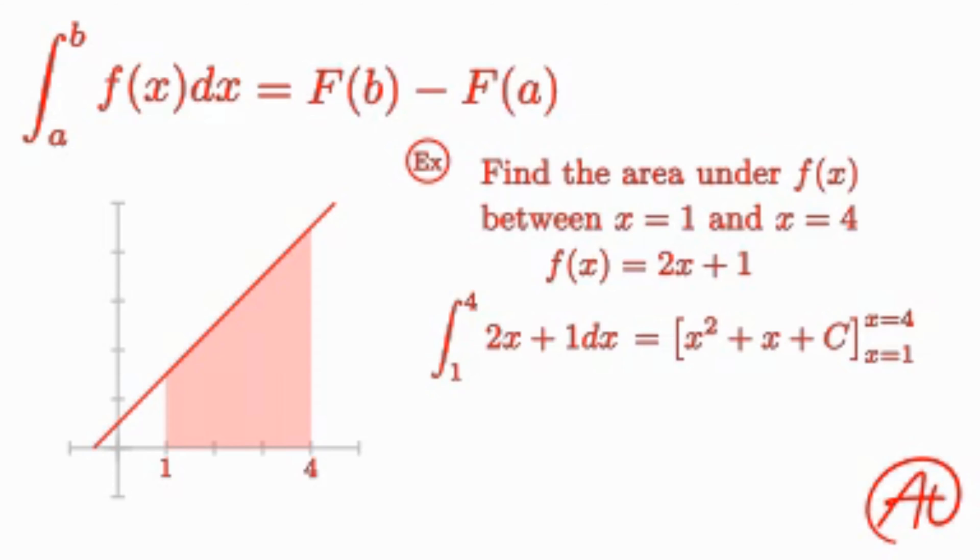So first, we need to plug in our upper bound of 4. Plugging that in, we get 4 squared plus 4 plus c, which represents this area here. Then we need to subtract what we get when we plug in our lower bound of 1. Plugging in 1, we get 1 squared plus 1 plus c, which represents this area here.